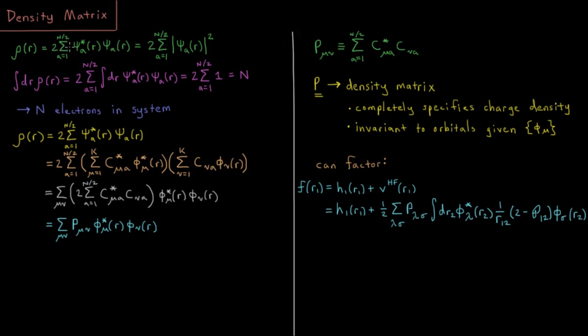This is the charge density for all the electrons. If we integrate with respect to all positions in space of this charge density, integration is a linear operator, so we can have 2 times sum over all occupied spatial orbitals integral over space psi star a psi a.